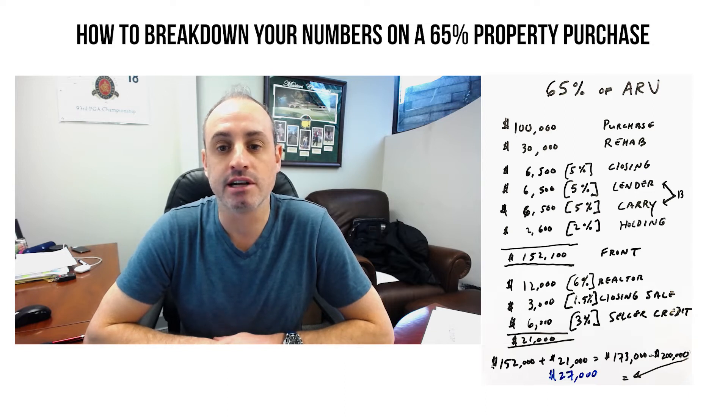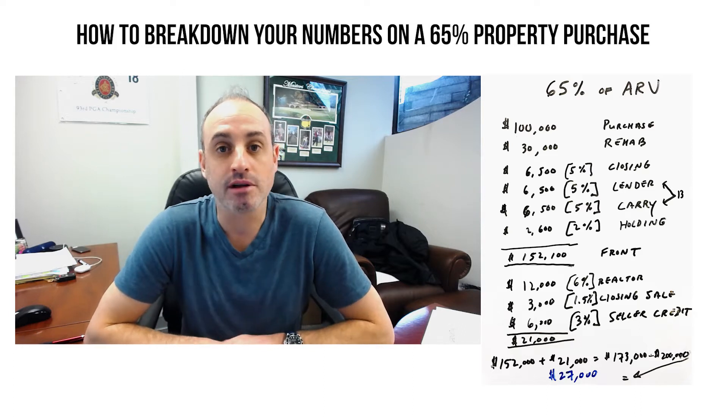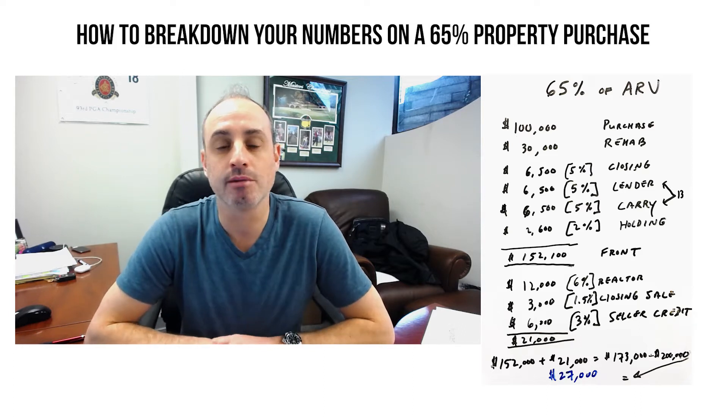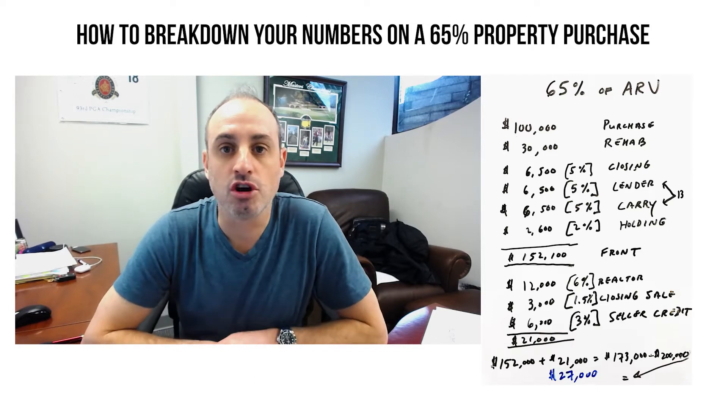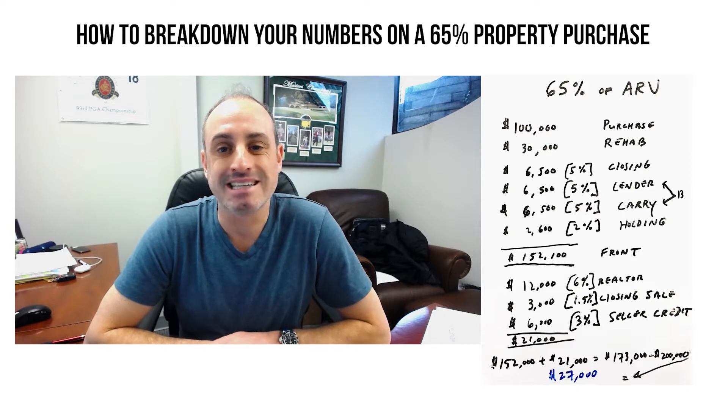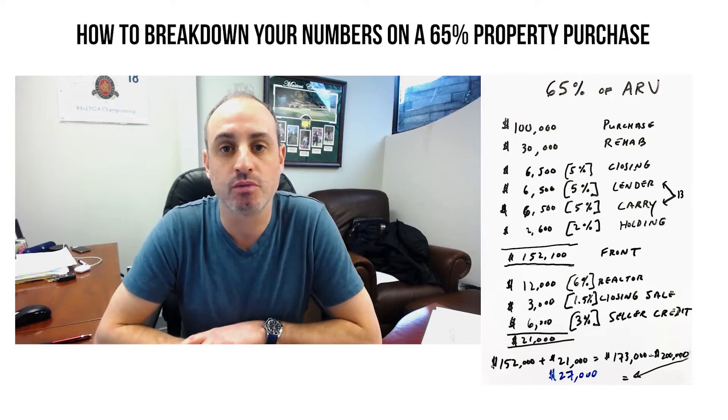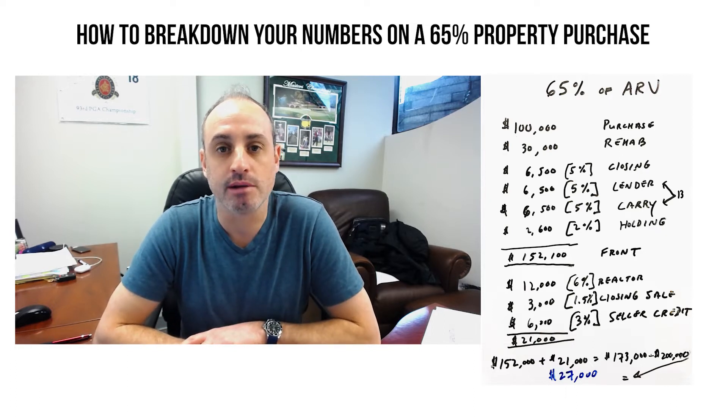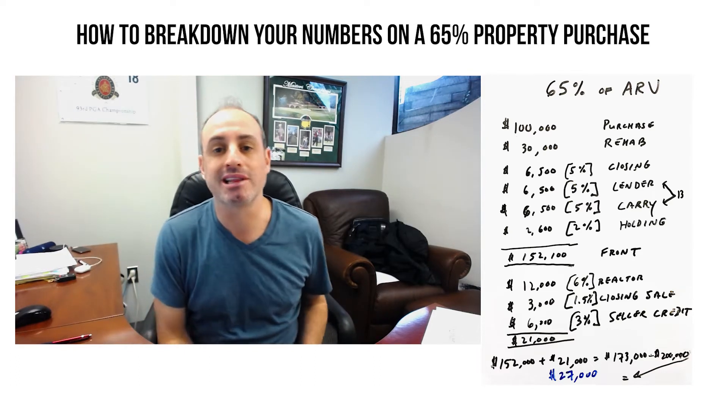You find a property that's going to resell for $200,000, 65% of that's $130,000. And ideally, if it needs $30,000 in rehab, then you have to pay $100,000 for the property. $100,000 purchase, $30,000 rehab, which are those two line items ahead.